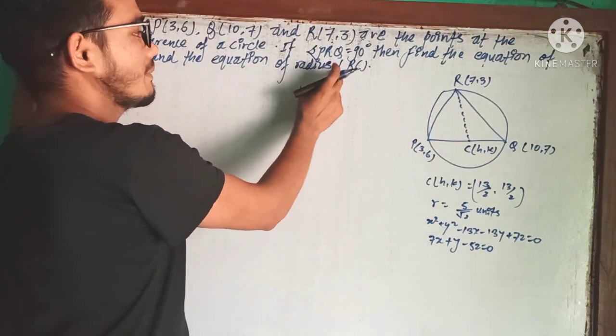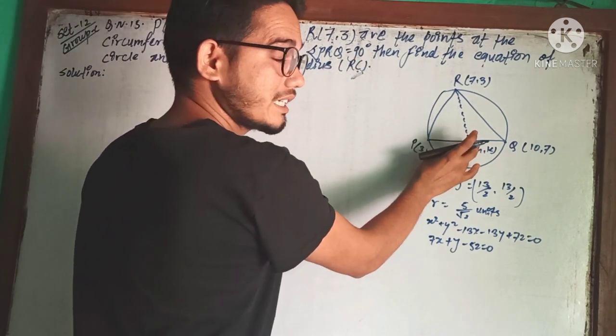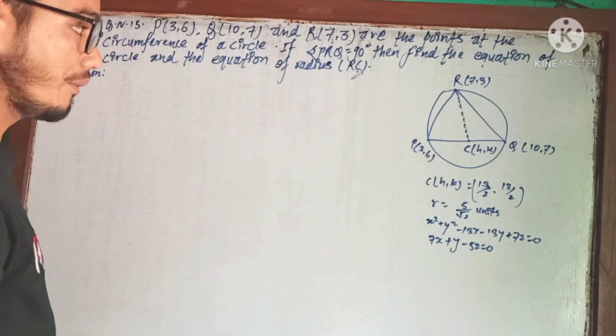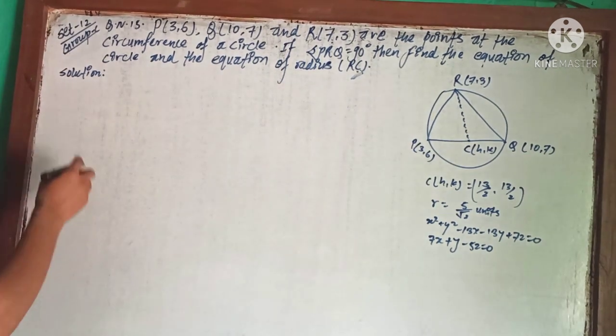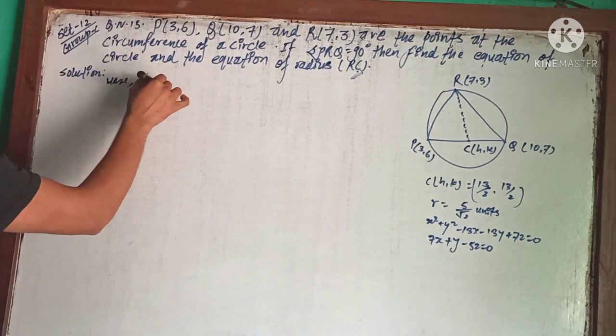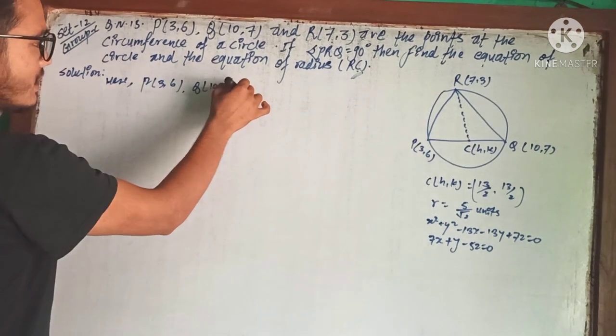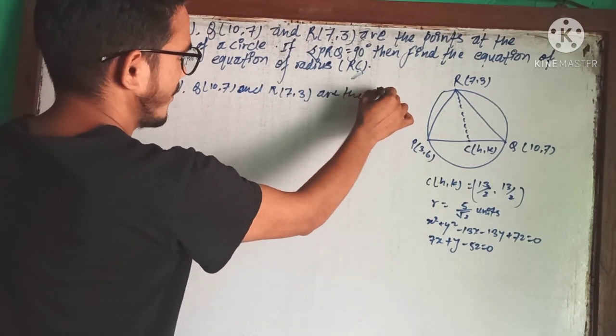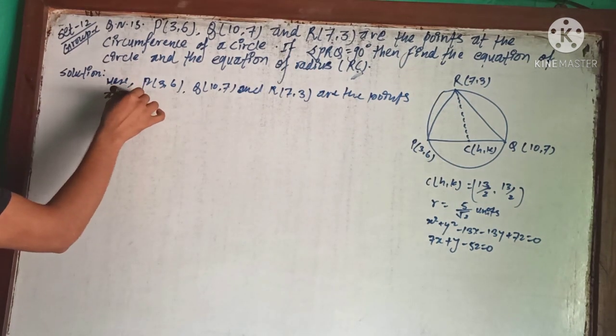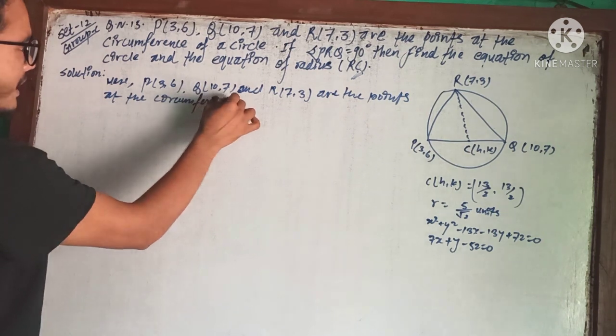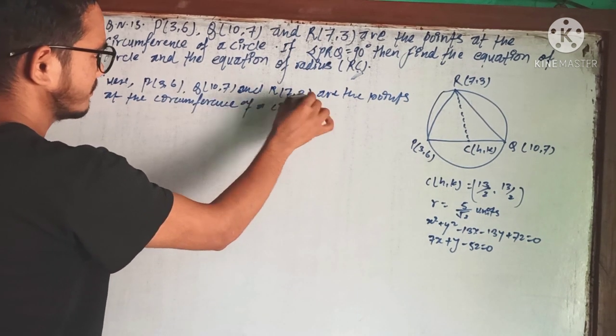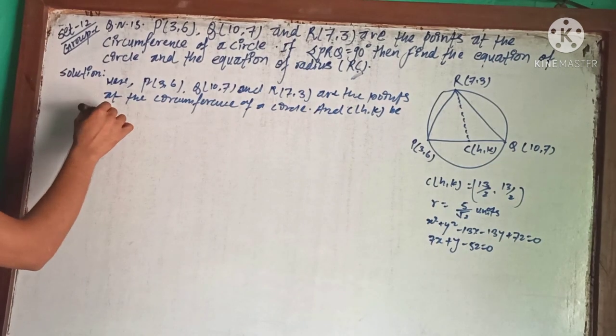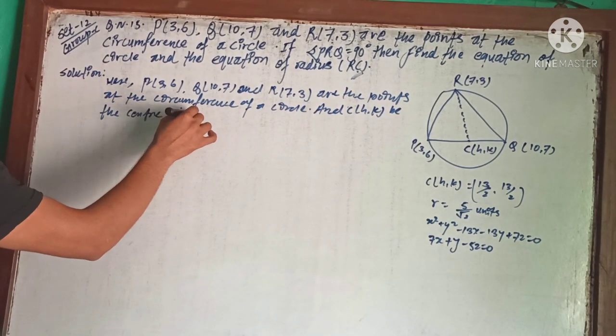Let the center be C with coordinates (h,k), and we'll find the radius R. First, let me draw the figure with points P(3,6), Q(10,7), and R(7,3) on the circumference, and C(h,k) as the center of the circle.